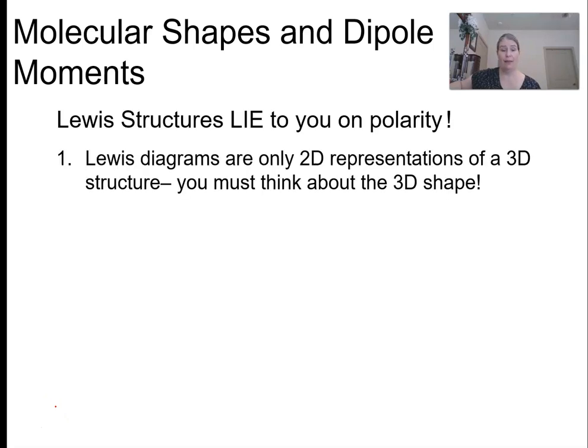So a key thing to think about here. Lewis structures lie to you about polarity because Lewis dot diagrams are 2D representations on a flat piece of paper. Lewis dot diagrams are not the 3D shape of any molecule other than a linear molecule, really. You have to think about the VSEPR shape, the three dimensional shape.